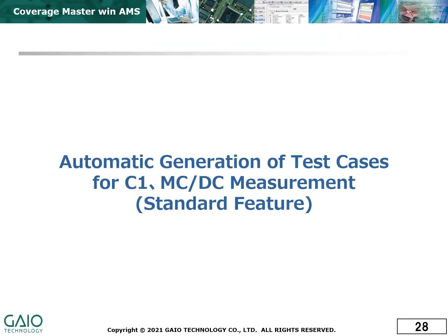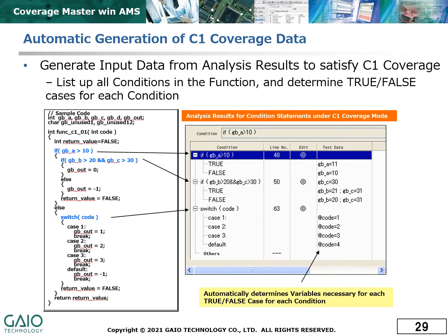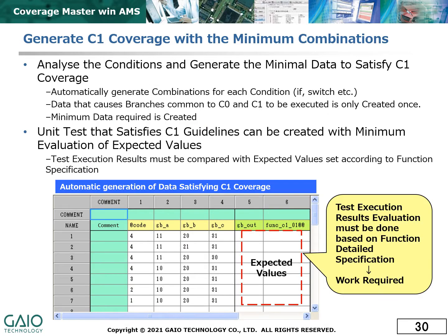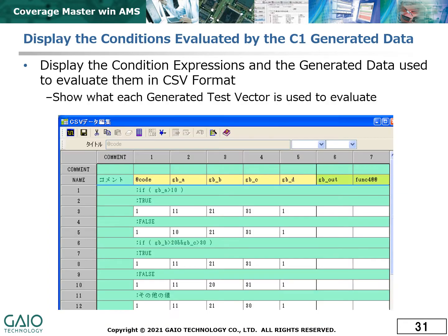CoverageMaster WinAMS can also generate test cases for the more complicated C1 and MCDC levels of coverage. Test data for C1 coverage can be generated automatically by testing both the true and false cases of each condition. In order to avoid redundancy in the test data, branches common to C0 and C1 should only be tested once, leading to greater efficiency in the evaluation of expected values and in the execution of the tests themselves. The C1 level data generated can then be examined to confirm what output data each test vector is designed to evaluate.